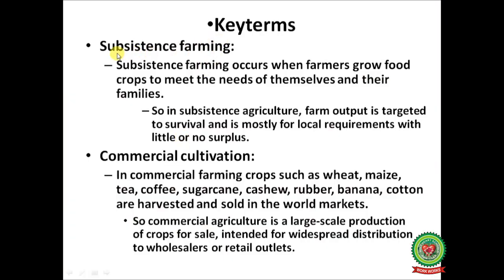Let's have a look at the important key terms. First one is subsistence farming. Subsistence farming occurs when farmers grow food crops to meet the needs of themselves and their families. In subsistence agriculture, farm output is targeted to survival and is mostly for local requirements with little or no surplus.